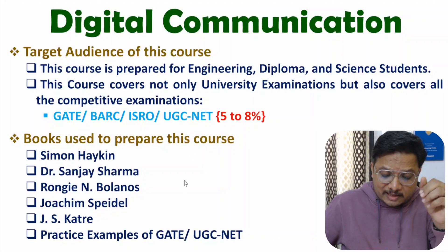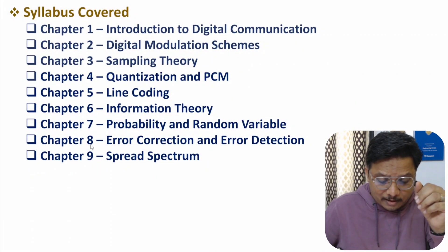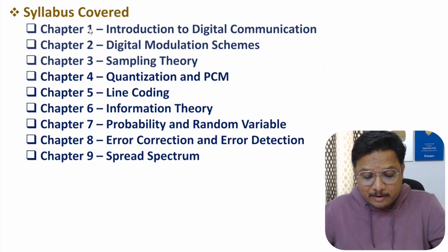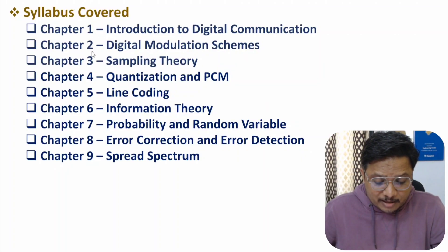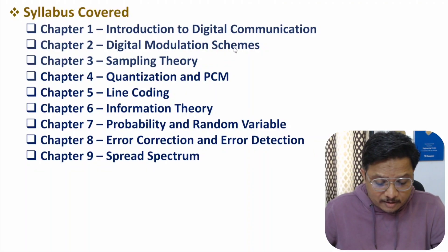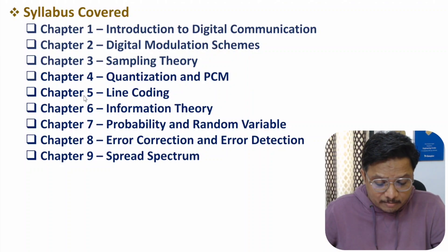In total, nine chapters are there in this course. In the first chapter, I have covered introduction to digital communication. In the second chapter, I have explained digital modulation schemes. In the third chapter, I have discussed sampling theory. In the fourth chapter, I have explained quantization and pulse code modulation. In chapter five, I have discussed line coding techniques.